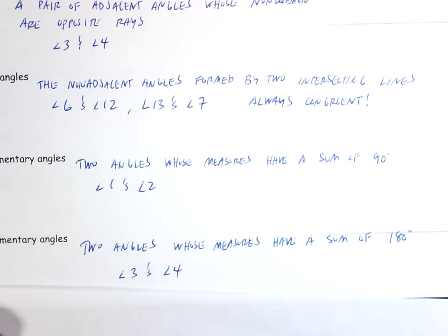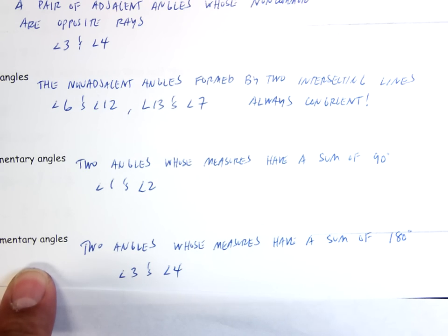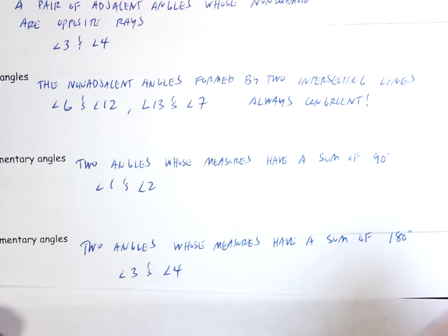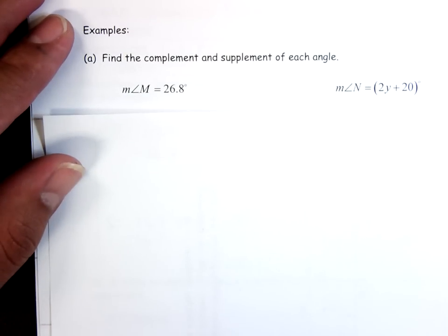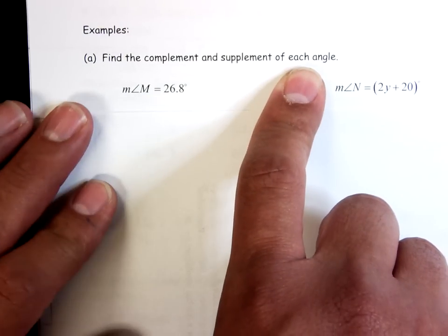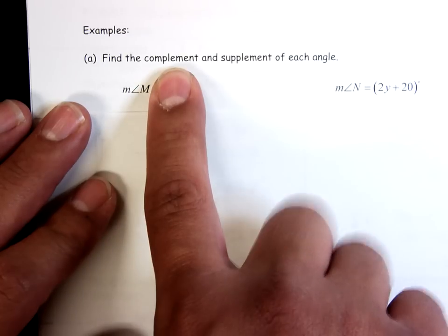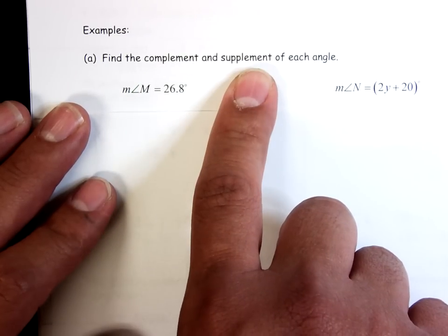So that's the vocab we've got to know. Most of us are okay on complementary and supplementary, but those first three — adjacent angles, linear pair, and vertical angles — we have to know; they're pretty important. Now let's look at how we use that. The problem says: find the complement and the supplement of each angle. Remember, complementary angles add up to ninety, supplementary angles add up to one eighty.